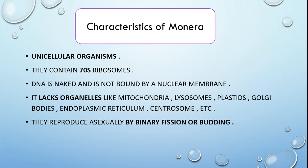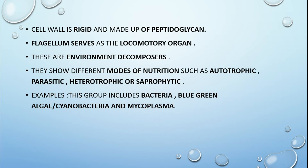Monera reproduce asexually by binary fission or budding — these are the two reproduction processes. The cell wall they have is very rigid and made up of peptidoglycan. The flagellum serves as a locomotory organ; organisms of Monera have a flagellum that helps them to move. They are also environment decomposers.